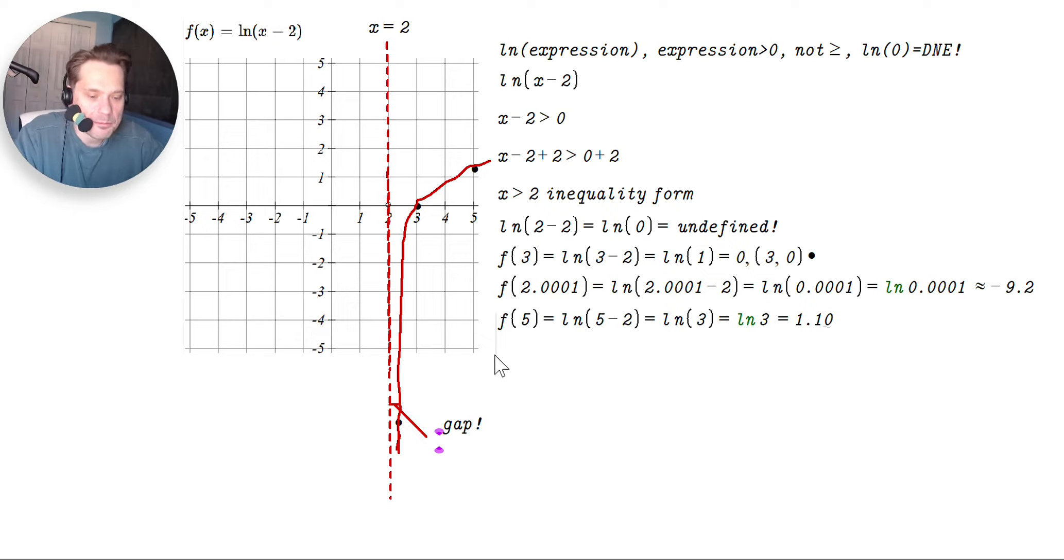Now, the domain then is x is greater than 2. We've plotted some points because the domain is like this. Let's also mark the domain in the graph here. So the domain is going to begin at 2 and go forever to the right. If you look at the, using a green arrow here, interval notation will look like this. 2.